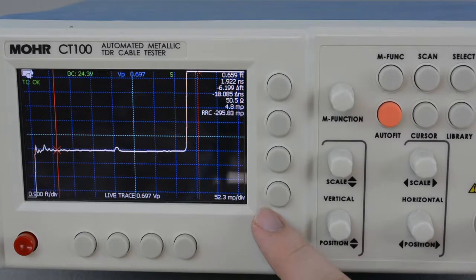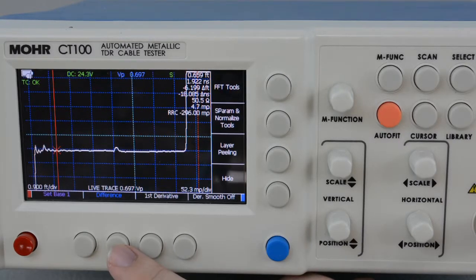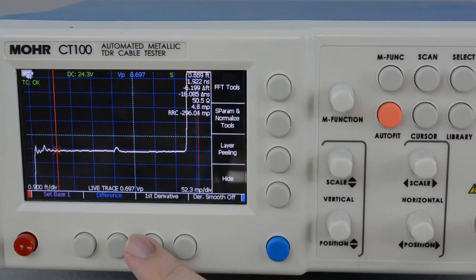Next, open either the main menu or the scan menu and select math. Then simply select first derivative to apply it to the selected waveform.